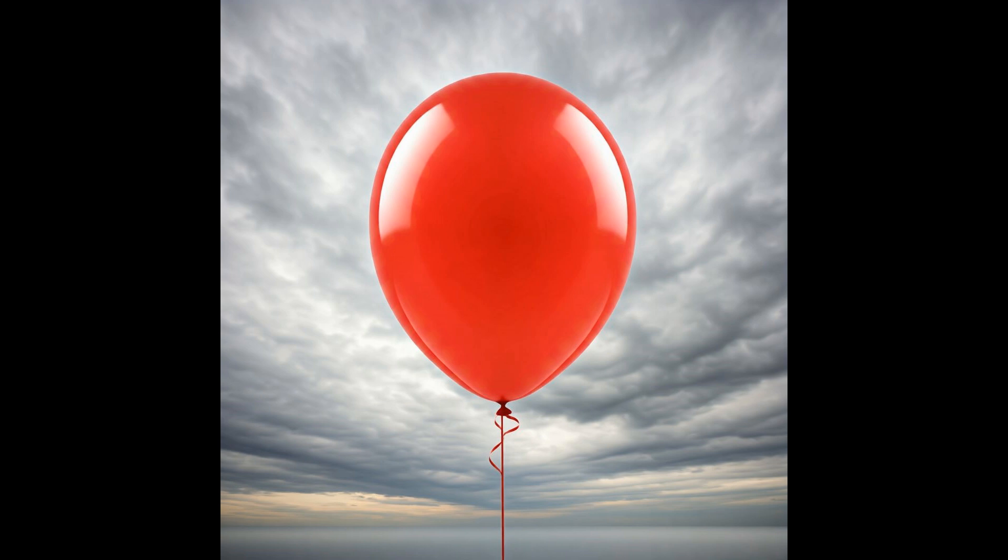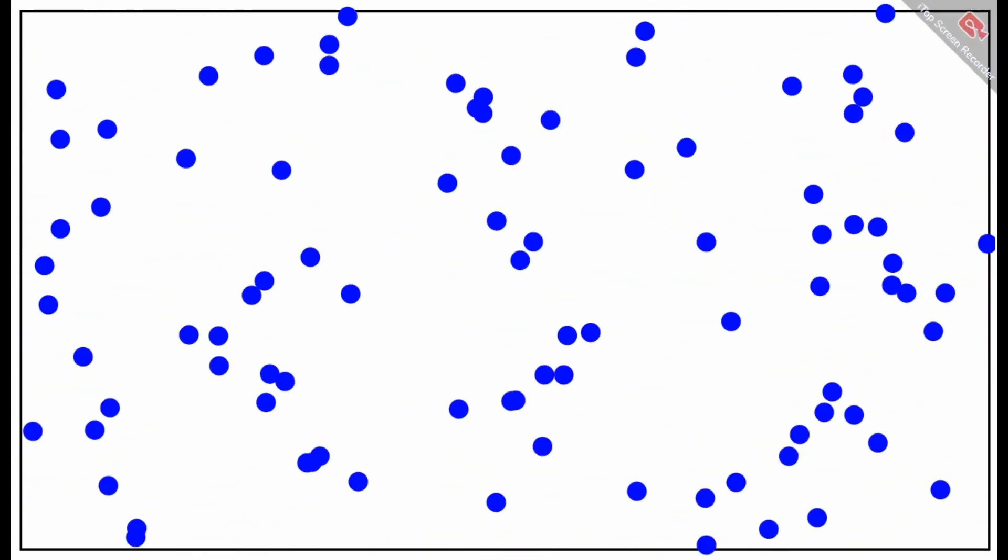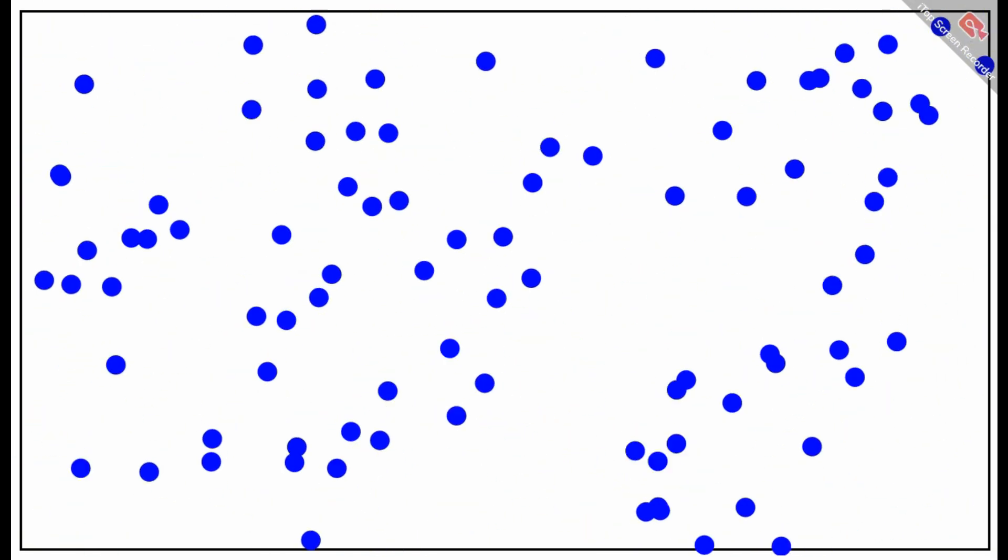The answer to this question is simple. Gas molecules distribute evenly throughout the container's volume. But then we're left with another question. Why? How do the molecules know to spread out evenly within the container? How do they agree among themselves?